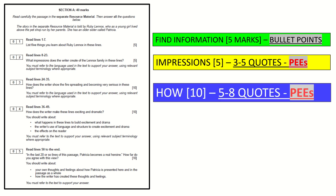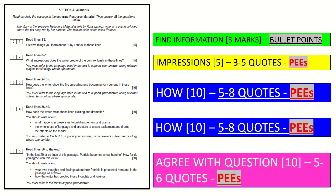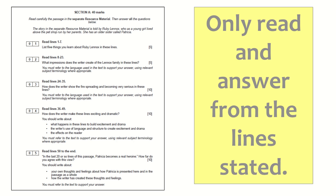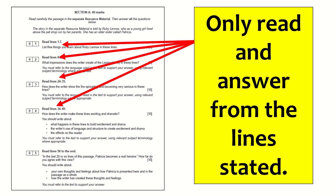Questions three and four will both be 10 marks — those are the two 'how' questions. The last question is the evaluation question where you agree with the statement. For example, it might say 'the character appears brave — do you agree?' Nine times out of ten you're agreeing and finding four or five quotes. Remember, you're reading and answering only from the lines stated, so don't read the whole extract at the start.